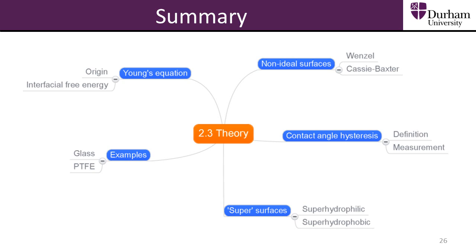Over the course of this section, we have seen how Young's equation is formed and how it is used to calculate contact angles for ideal surfaces. We have expanded on Young's equation to look at the non-ideal surface cases, studying the Wenzel and Cassie-Baxter regimes. We have also defined contact angle hysteresis and seen how it is measured, and termed two new types of surface: superhydrophobic and superhydrophilic. Finally, we have discussed examples of different materials which are hydrophobic and hydrophilic, and explained the origin of their behaviours in terms of surface-free energy and interactions with water.